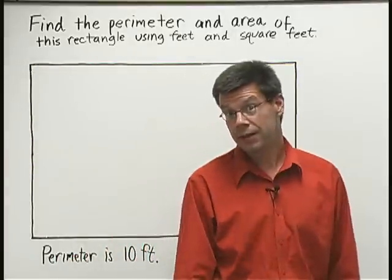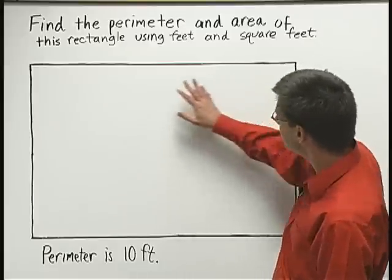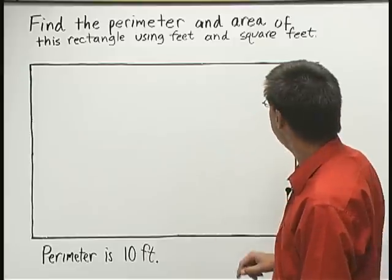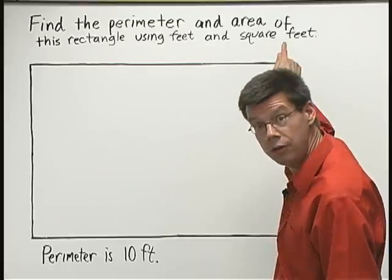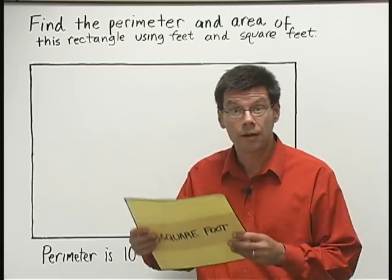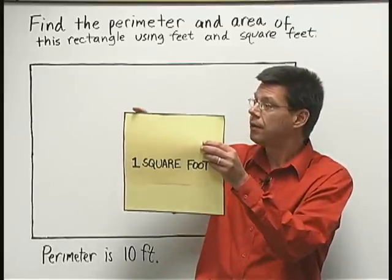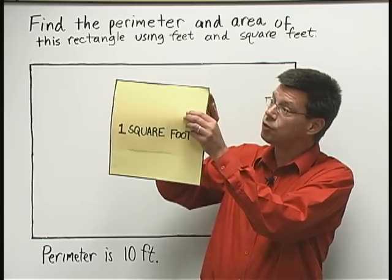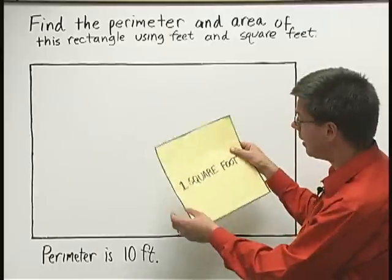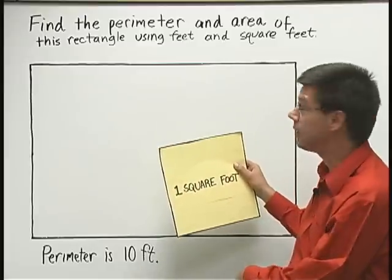Now let's calculate the area of this rectangle. The area of a rectangle is a measure of the space inside the rectangle, and we're going to measure the area using square feet. Here's an example of a square foot — a square foot is a square that measures one foot along each one of its sides. We're going to fill up the inside of this rectangle with square feet and count how many square feet it takes to fill up the inside.